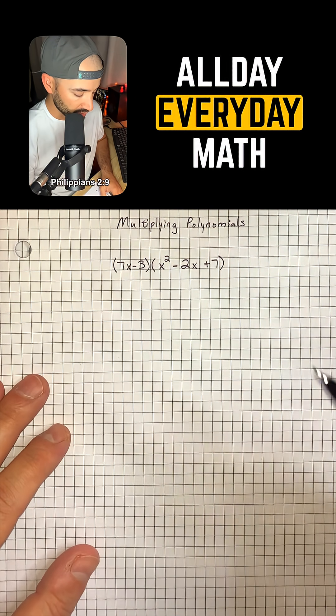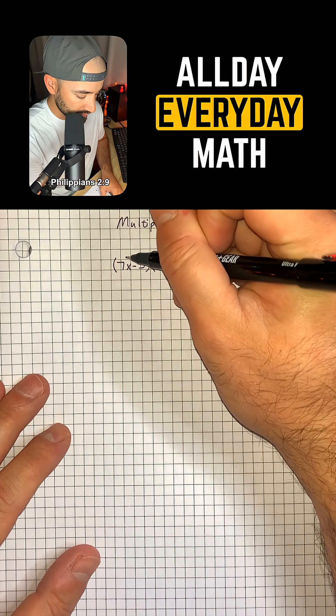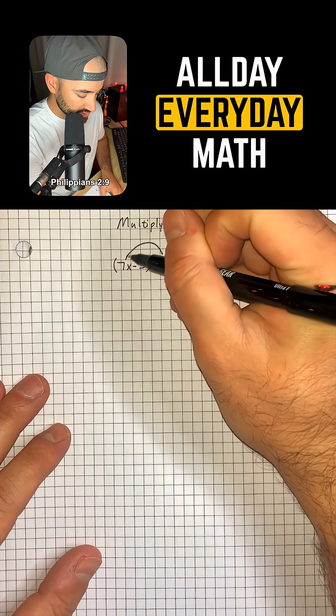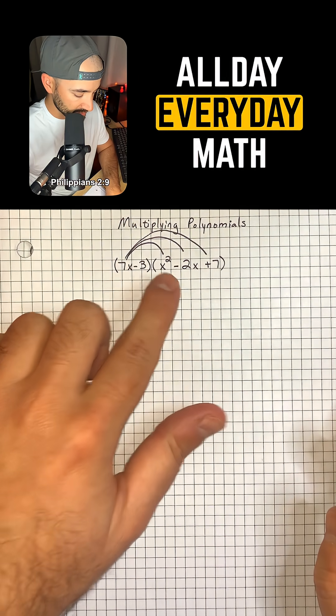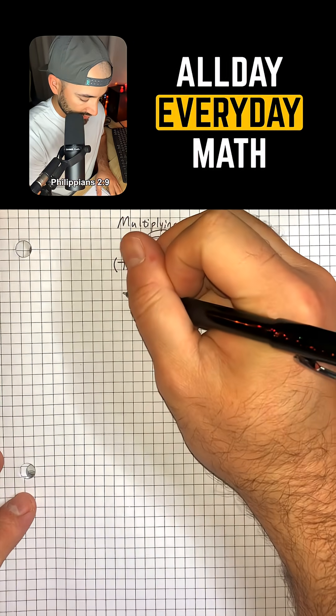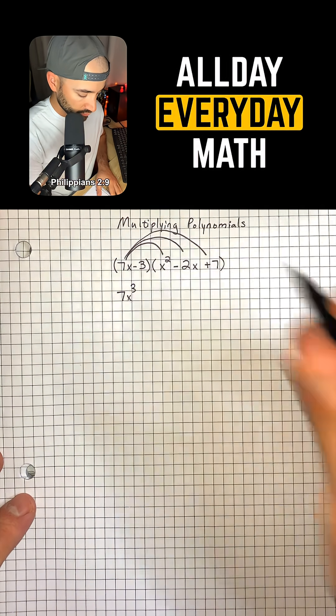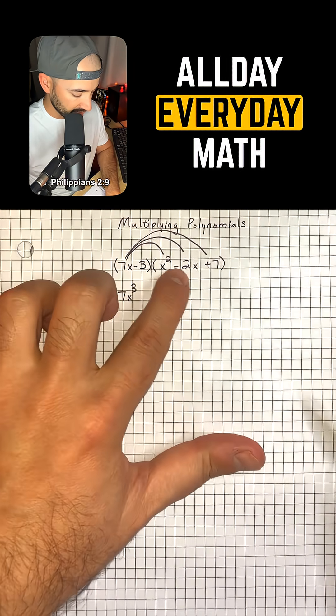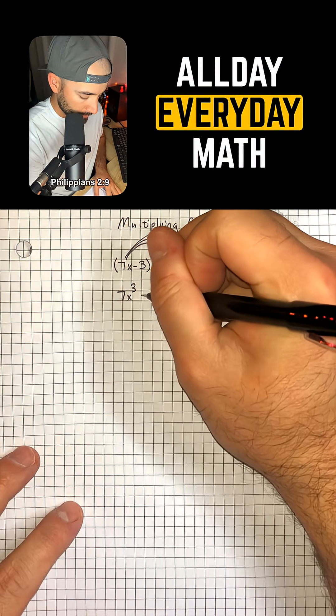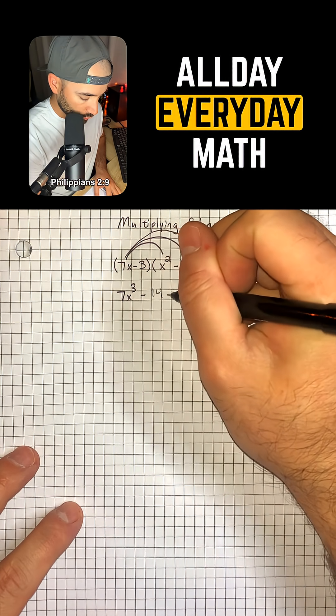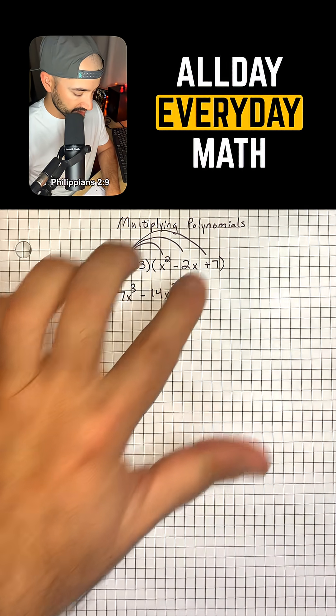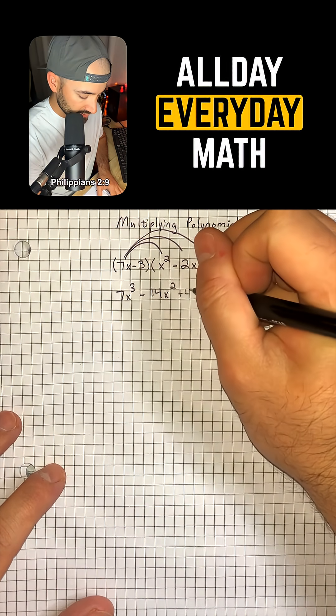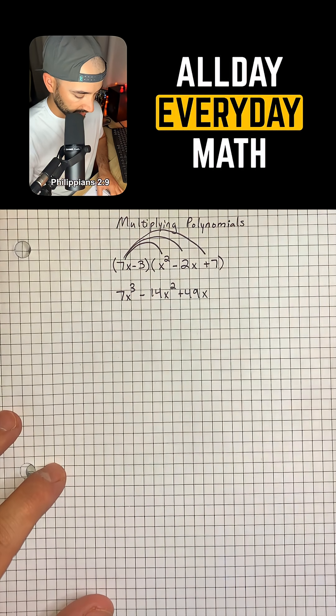First of all, we're going to multiply 7x times each term in the second set of parentheses. So 7x times x squared is going to give us 7x cubed. 7x times negative 2x is going to give us negative 14x squared. And then 7x times 7 will give us plus 49x.